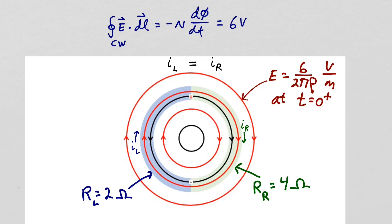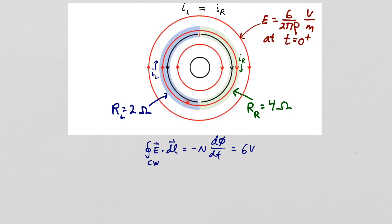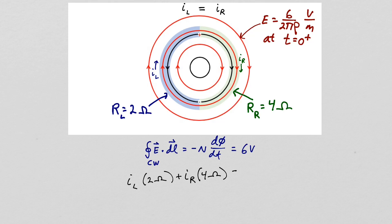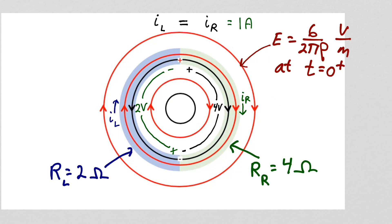Applying Faraday's law to a clockwise path through the ring: the integral of E dot dL through the left half of the ring equals the current in the left half times two ohms, and the integral of E dot dL through the right half equals the current in the right half times four ohms. These sum to the electromotive force of six volts. Since in steady state the current in the left half ring equals the current in the right half ring, the current flowing around the ring is one amp. So in steady state, there are two volts dropped across the left half ring and four volts dropped across the right half ring, and summing the voltage drops gives six volts, equal to the electromotive force from the solenoid.